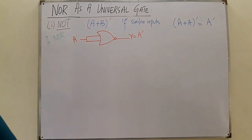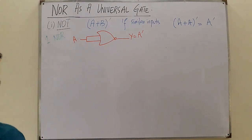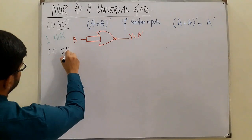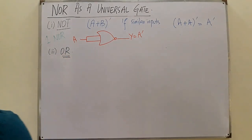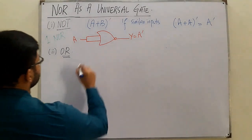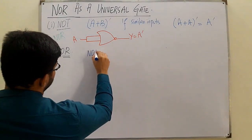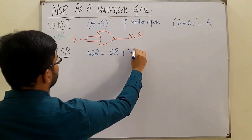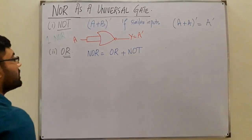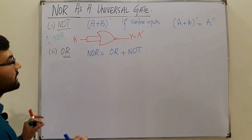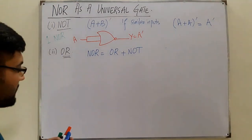The second is the OR gate. For NOR, we know that NOR is basically the OR operation followed by a NOT gate, which means the NOR complements whatever the OR gives it.